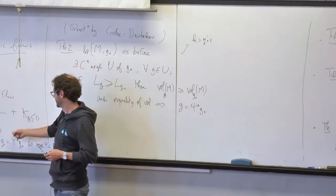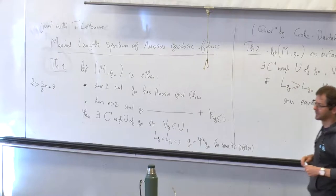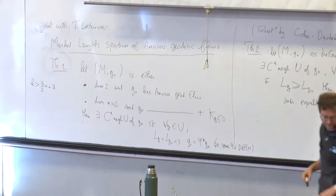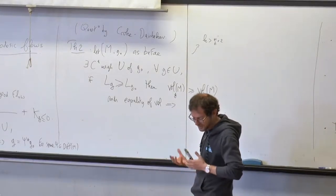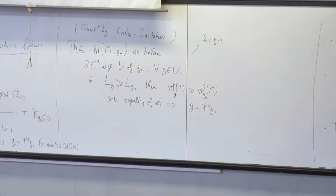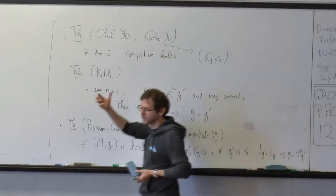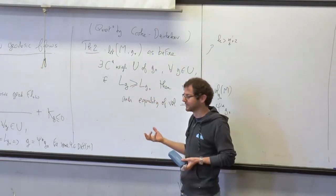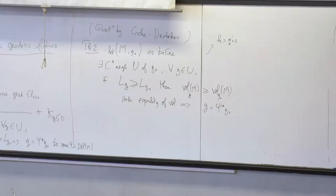This really says that locally the Marked Length Spectrum is a parameter for the isometric class of Anosov manifolds. In the proof we also get stability estimates: if the Marked Length Spectra are close to each other, we can say that the metrics are actually close. We can control the distance between the isometric classes in terms of the Marked Length Spectrum, and this is a Hölder stability estimate.